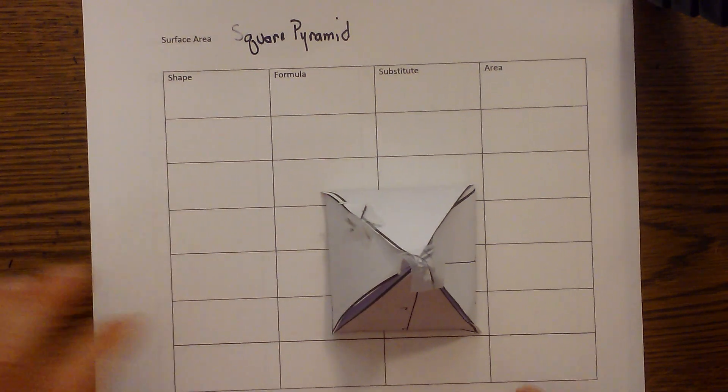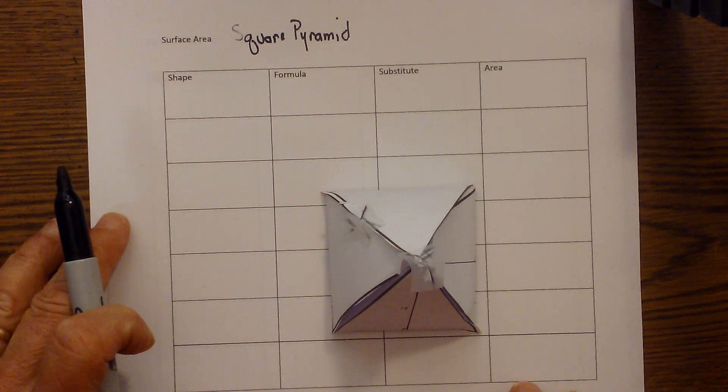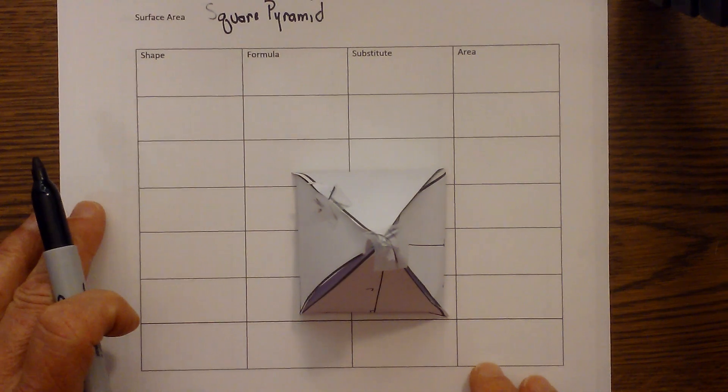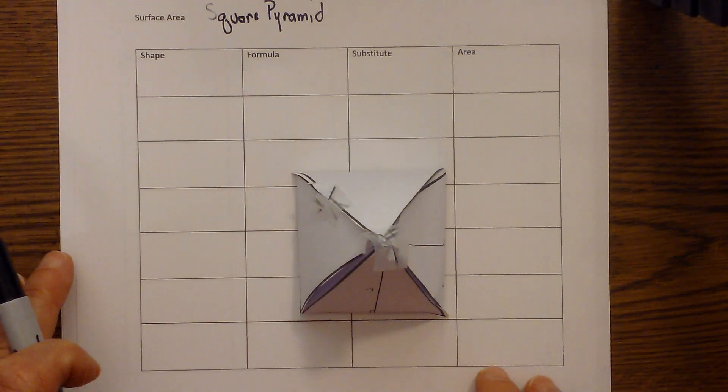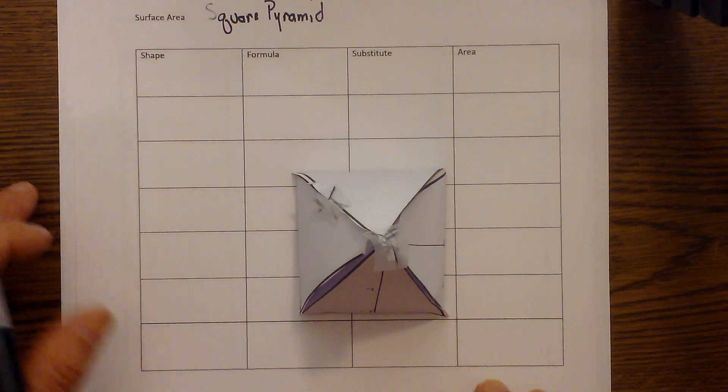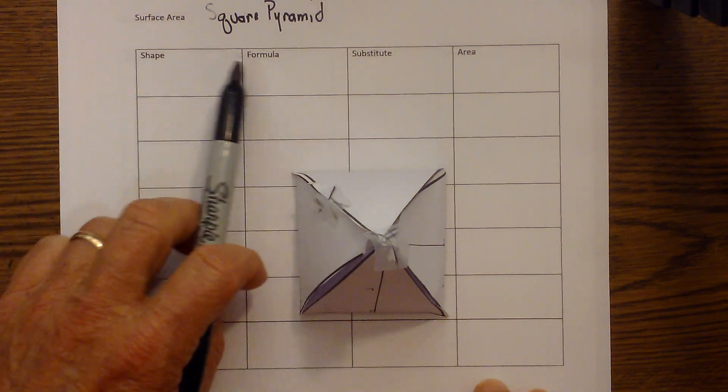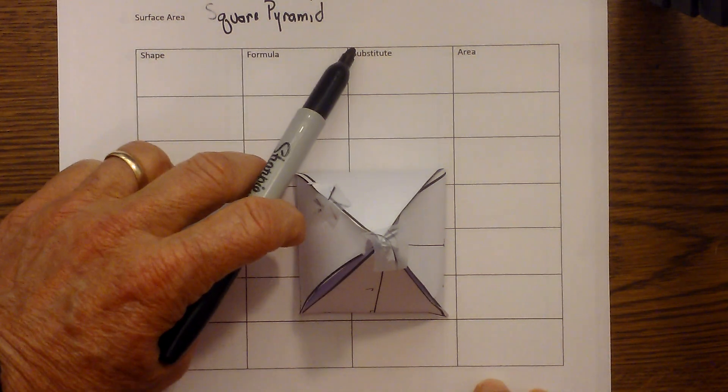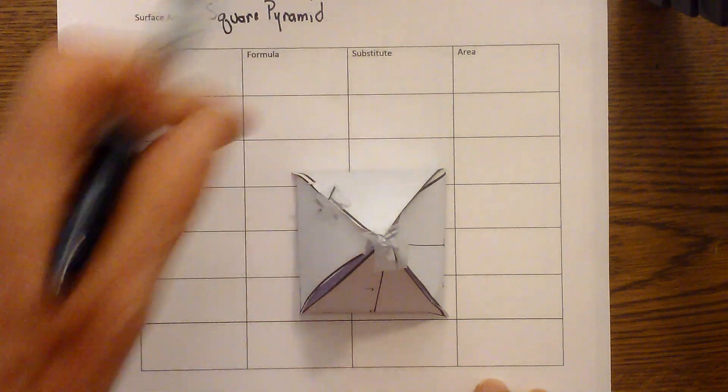I have two things here that can help you not get confused when you're calculating surface area. One, I'm going to open this up so you can see the net so you can see all the shapes. Secondly, I have this grid that helps you organize your data. In it I have shape, area formula, substitute in your numbers, and then the area.